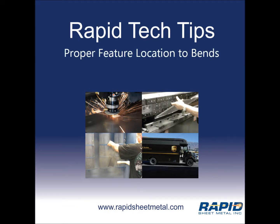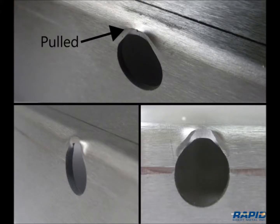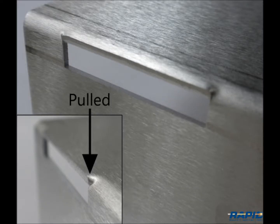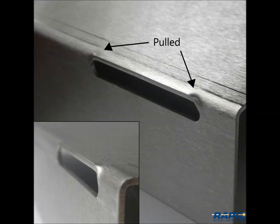This rapid sheet metal tech tip reviews proper feature location to bends, so as to avoid feature distortion. Sheet metal parts that have features too close to the bend may distort. Some examples of features that may distort are holes, slots, and rectilinear openings such as rectangles and squares.